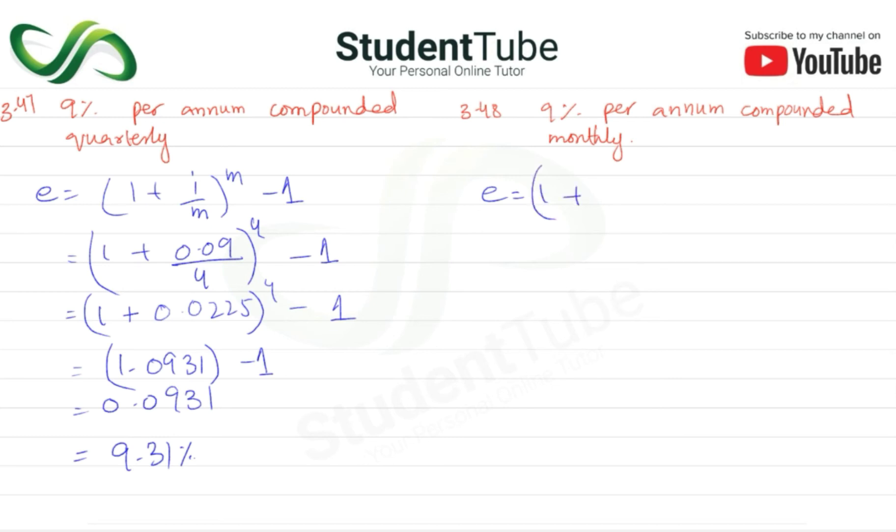So 1 plus i upon m to the power m minus 1. So 1 plus i is 0.09, and the answer is 0.0938, minus 1.